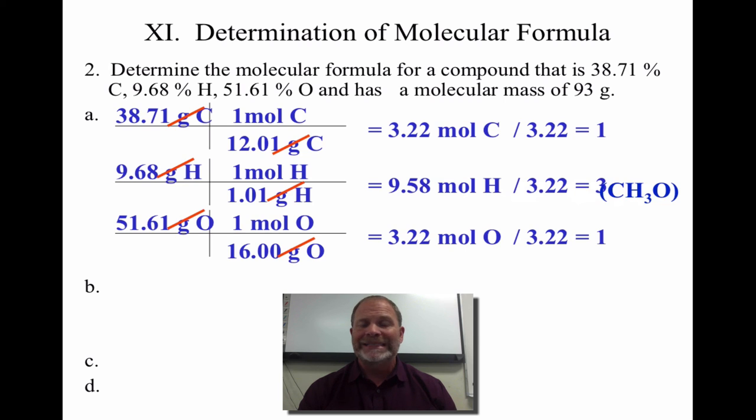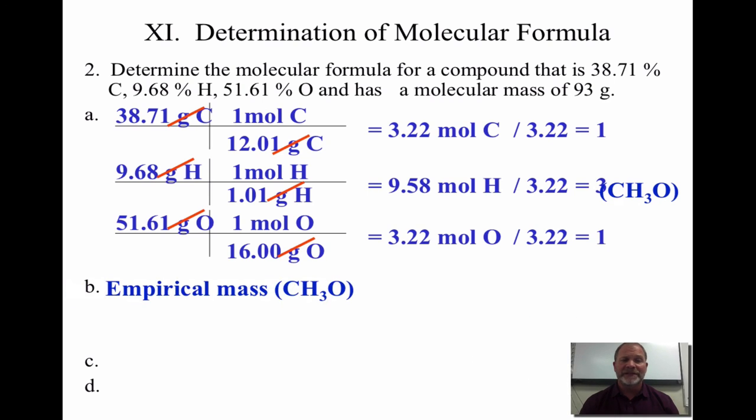Now my molecular mass is 93. To find my multiple, which I'm going to distribute back through my empirical formula, I have to take my molecular mass divided by my empirical mass. To get my empirical mass, I just add up one carbon, three hydrogens, and one oxygen, weighing in at 31.04 grams.